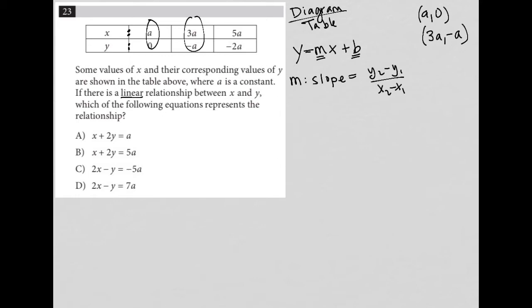So to replace Y2 minus Y1 with the terms here from my ordered pair, I'd have negative A minus zero. To replace X2 minus X1, again, from the numbers here in my ordered pairs, I'd have 3A minus A. Negative A minus zero is just negative A. 3A minus A is 2A. And that all simplifies to negative one half. So M equals negative one half.